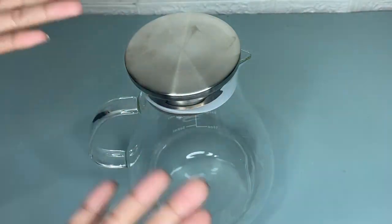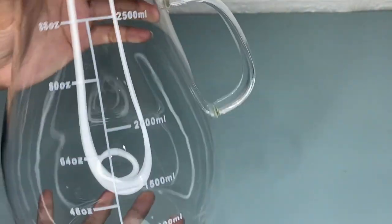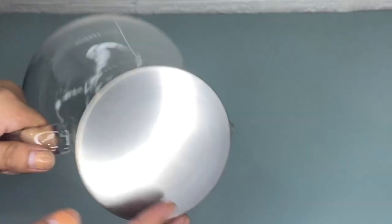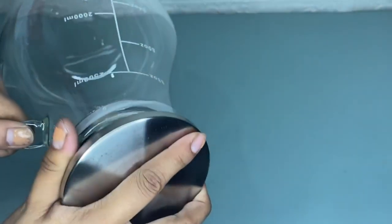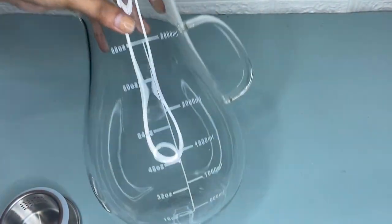Hi guys, so today I'm going to share with you my honest review about this Lior Yoyo glass pitcher with lid. As you can see we have here this pitcher and it can withstand a temperature of negative 20 to 150 degrees Celsius or negative 4 to 302 degrees Fahrenheit.